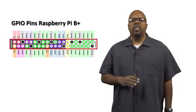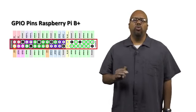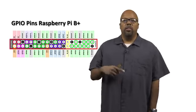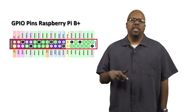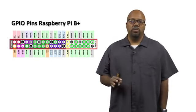If you look at the picture, there are 40 pins, two rows, 20 pins each row. There are other Raspberry Pis, like the Raspberry Pi B and the Raspberry Pi A, and those have 26 pins.